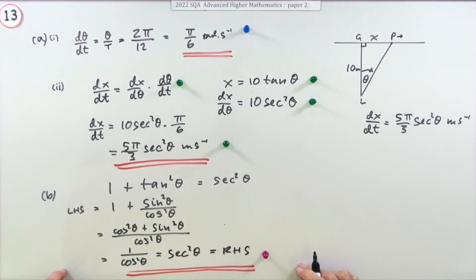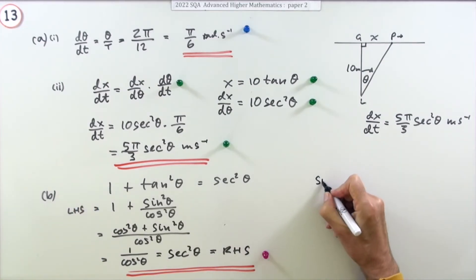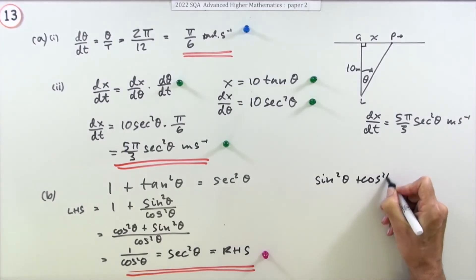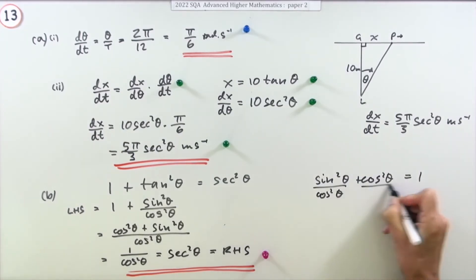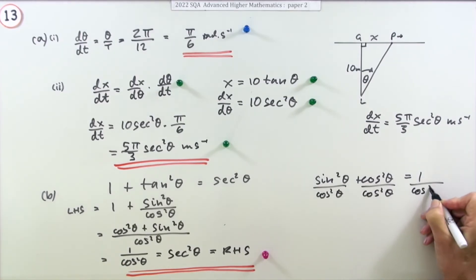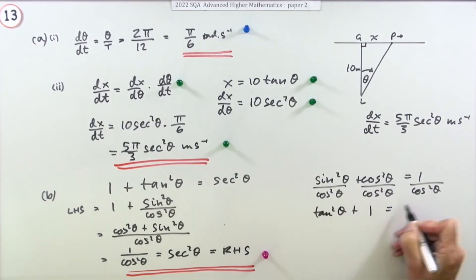You could also have arrived at that result rather than starting with this identity, just by saying what happens if you've got sin² θ and cos² θ, you know that makes 1. Dividing everything by cos² θ gives you sin over cos is tan, that's tan² θ. They're both the same, that's 1, and that's sec² θ. So you could have done that as well.